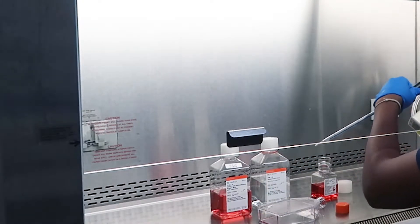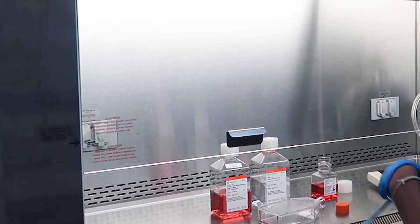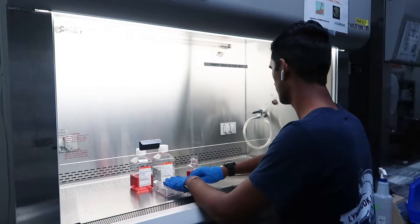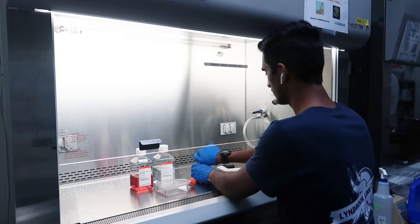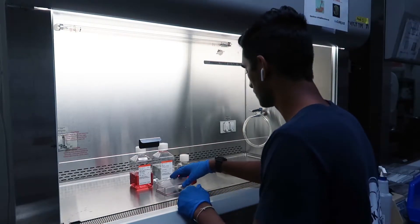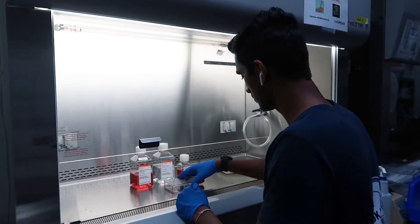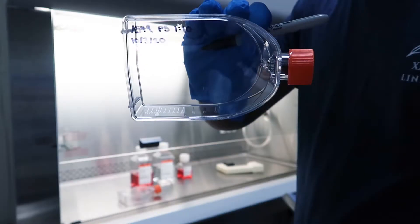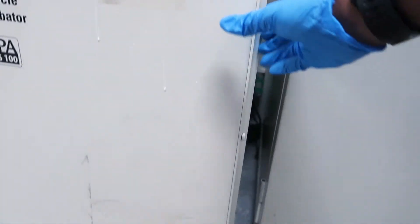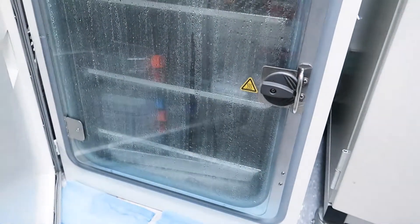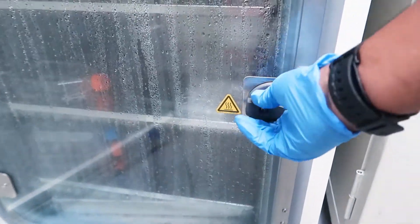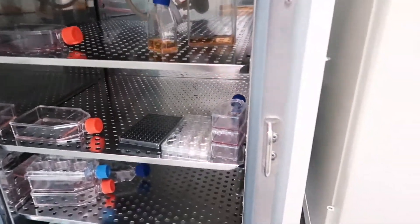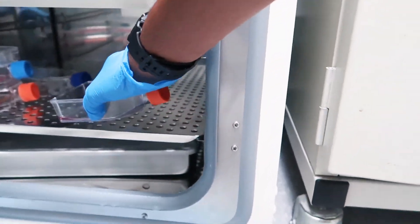Once you add your trypsin EDTA, make sure that you swivel your flask so that your trypsin like the PBS covers all of the cells. Once you do this, we're going to incubate the flask for three to five minutes at 37 degrees Celsius in the incubator. Now you don't want to leave it too long, but you don't want to force the cells to detach before they're ready. So make sure to leave it again for three to five minutes.